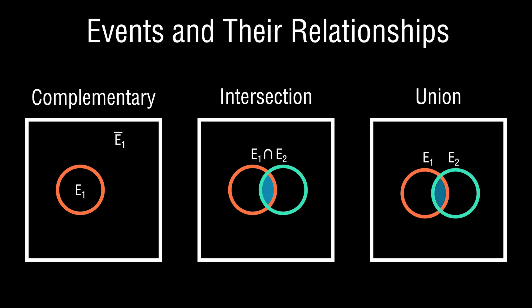And then lastly there is the union, which represents the probability that either event one and/or event two would occur. Because it's the union, we tend to use the union operator to represent this.